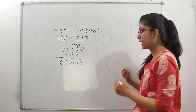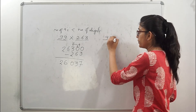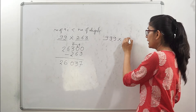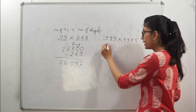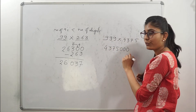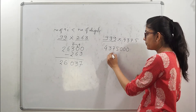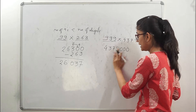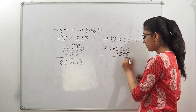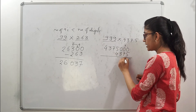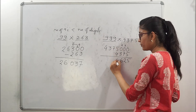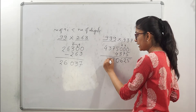Let's do one more: 999 × 4375. Since there are 3 nines, we write 4375 followed by triple zeros: 4375000. Now subtract 4375 from the last digits. 10−5=5, 9−7=2, 9−3=6, 4−4=0. So the last digits come to 0625, and the leading part gives 4374. The answer is 4374625. With repeated practice, this same trick takes very little time in your calculation.